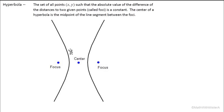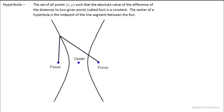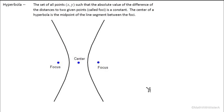Similar to the ellipse, we find a point and look at the distance to one focus and the distance to another focus. But with a hyperbola, instead of adding those distances we subtract them. The difference will be constant for any point on either branch. We choose a point, find the distance to one focus, subtract the distance to the other focus, and we get a constant.